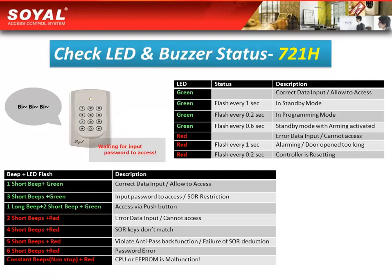In this section, we will learn all the LED status of the 721H. Our controller 721H will show two colors of LED light: one is green and the other is red. The green light means correct data input and allow access, but the status of the controller is in a different mode when the green light has different seconds of strobe or flash.